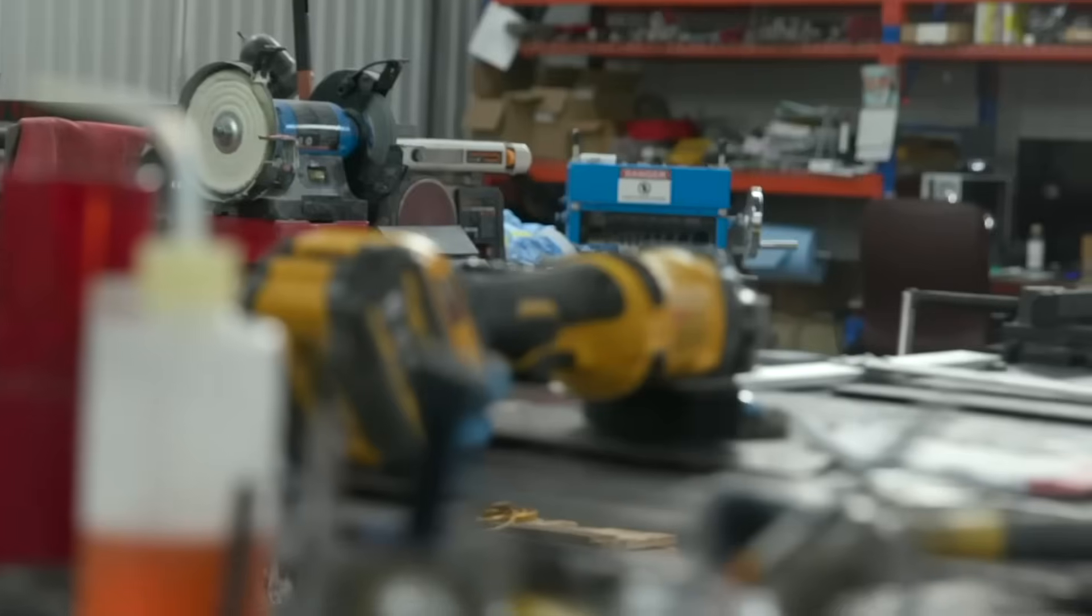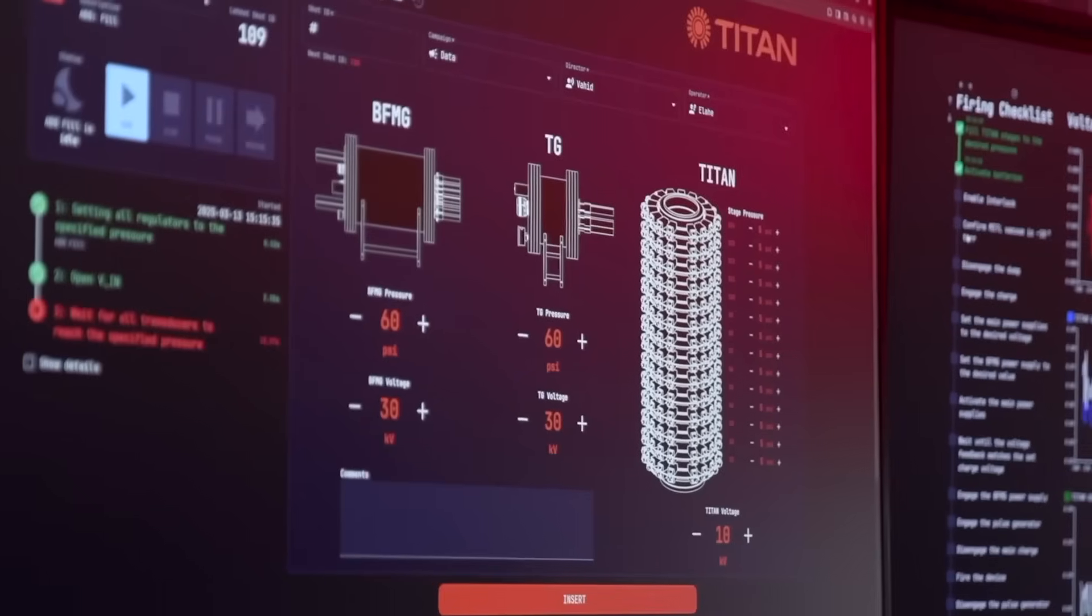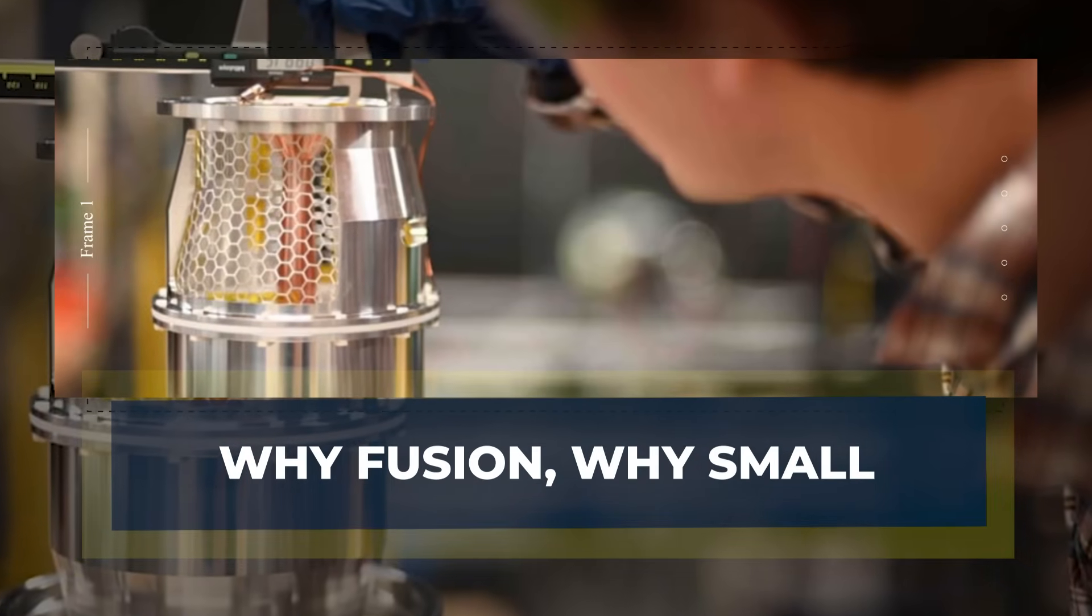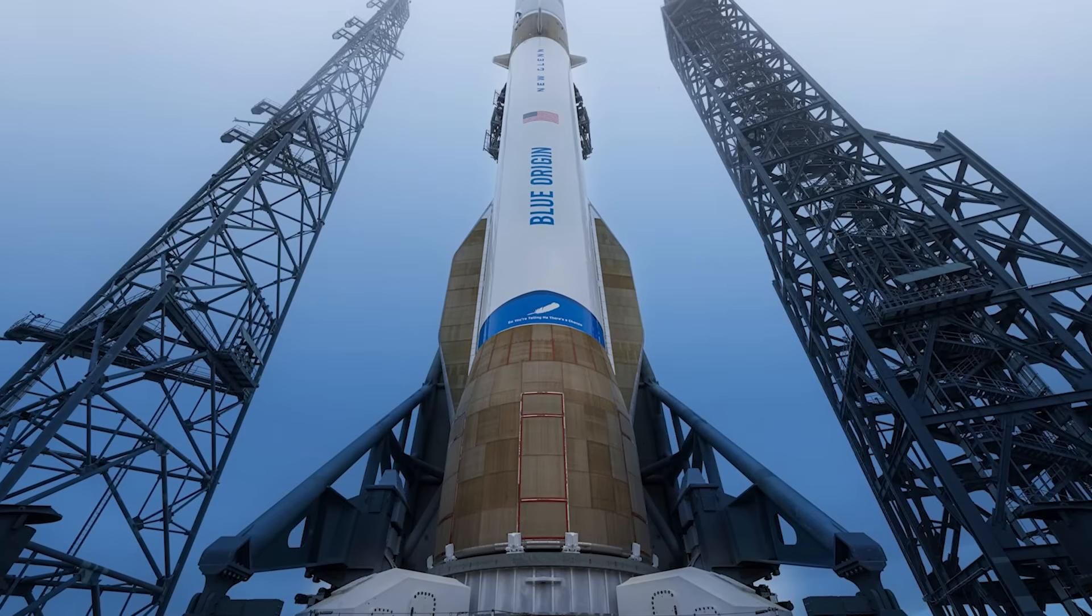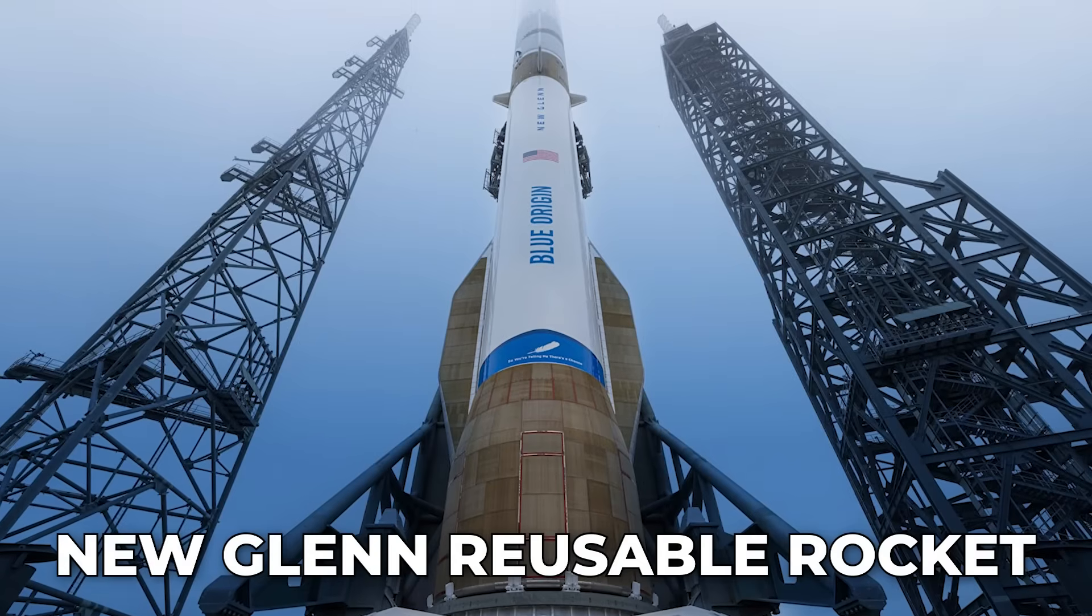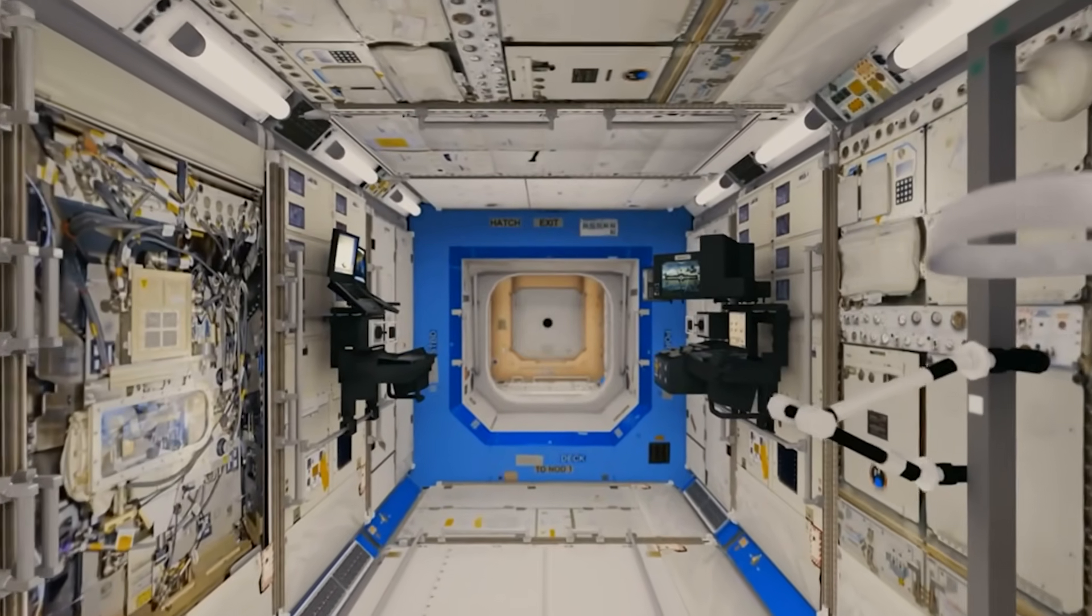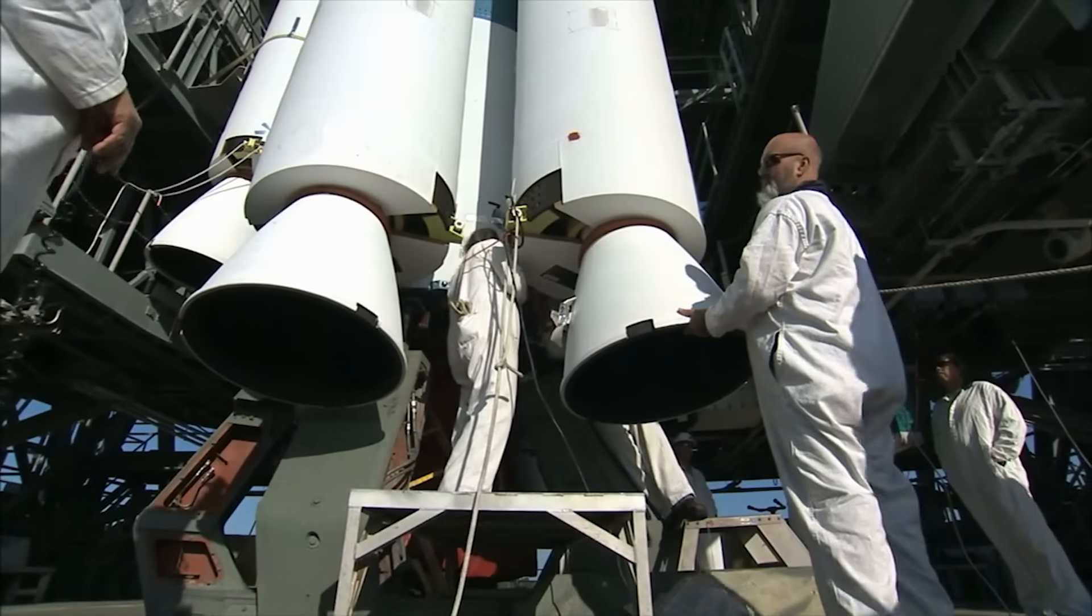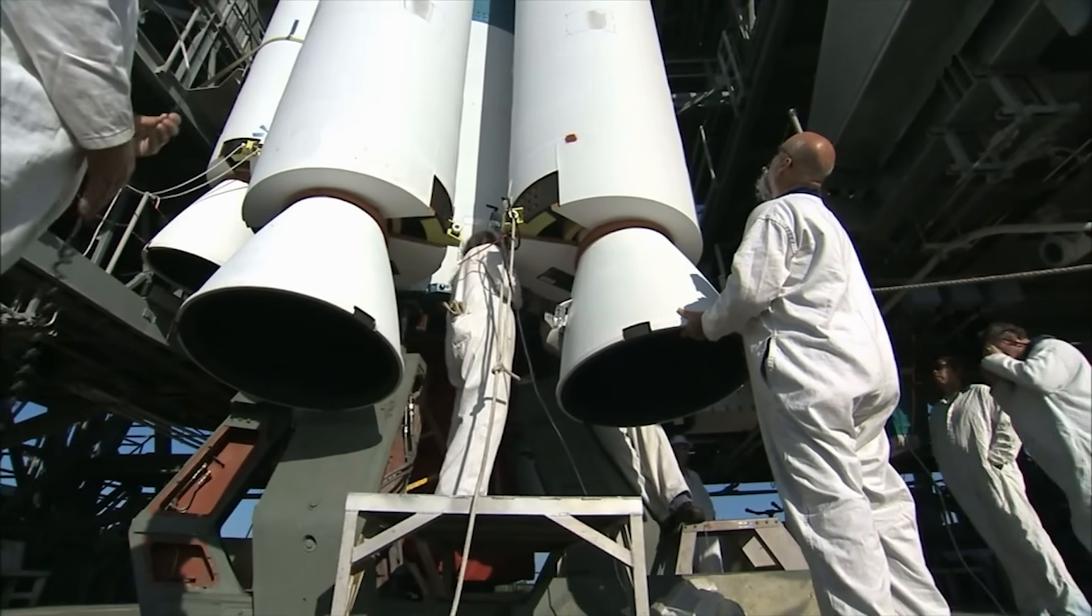Their bet was simple. Build small, test often, and treat every failure as a data point, not a verdict. The founders did not come from nowhere. One started at Blue Origin in 2014, and met Bryant while they were among the first ten people working on the New Glenn reusable rocket. That job carried a dream: millions of people living and working in space. It also carried a hard lesson.